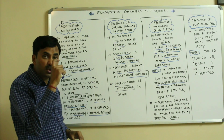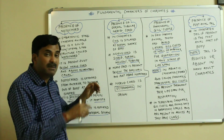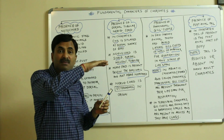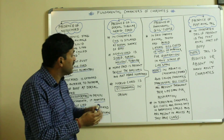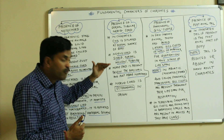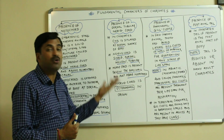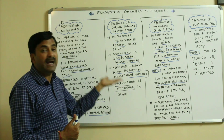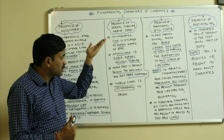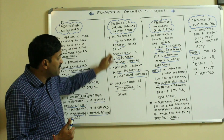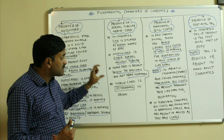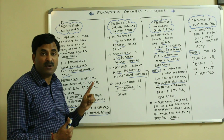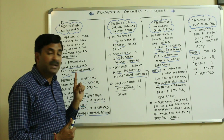Now see the position of the nerve cord: it is present below the body wall and just above the notochord. And remember that the nerve cord is ectodermal in origin, meaning it originates from the embryonic layer called the ectoderm.